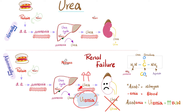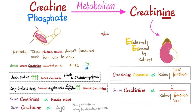Many of these toxic waste products that accumulate in the blood are acidic — such as sulfuric acid, phosphoric acid, lactic acid, uric acid — and that's why this can lead to metabolic acidosis. That was the story of urea.